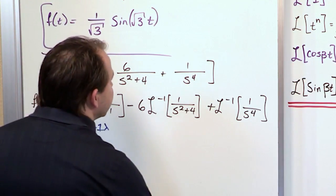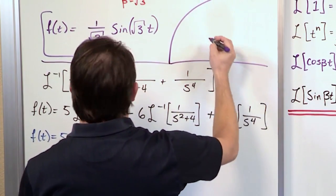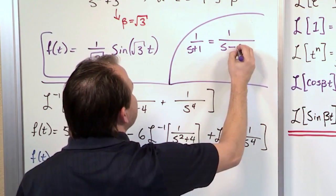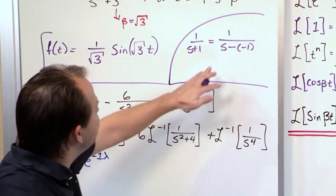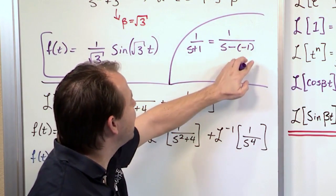I'll just do like a little kind of an aside. So you can say that 1 over s plus 1 is the same as 1 over s minus negative 1. So you can write this as a minus anytime you want. So when you see it written like this, you can immediately match this up because it's written as 1 over s minus lambda.